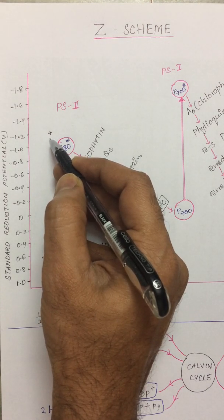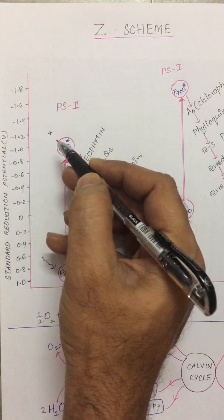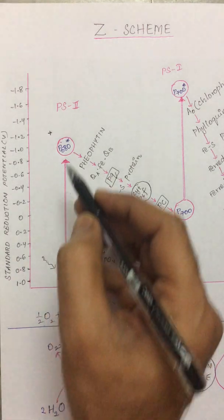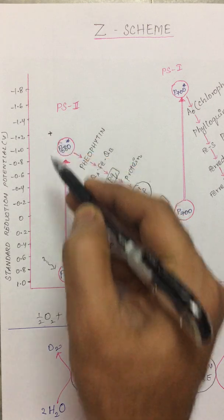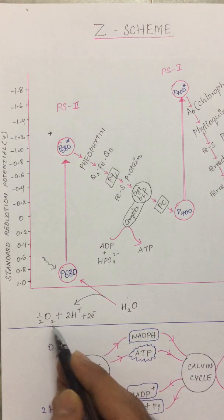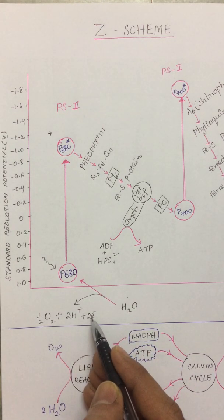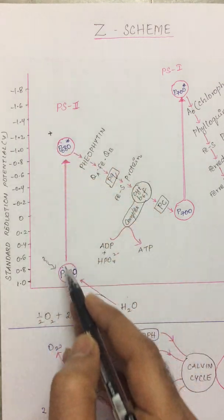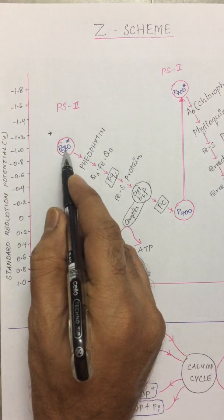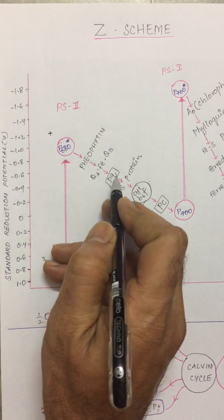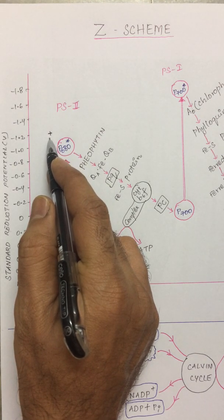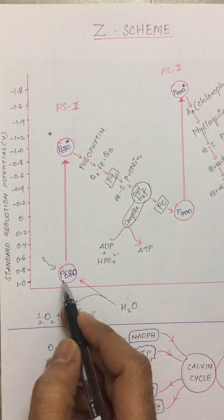Once converted into a cationic form, P680 acts as a very strong oxidizing agent — it is in thirst for electrons. It will try to gain electrons and drop back to normal P680. This creates a driving force for the splitting of the water molecule. When a water molecule splits into oxygen, protons, and electrons, those electrons are taken up by the cation, returning it to its normal position.